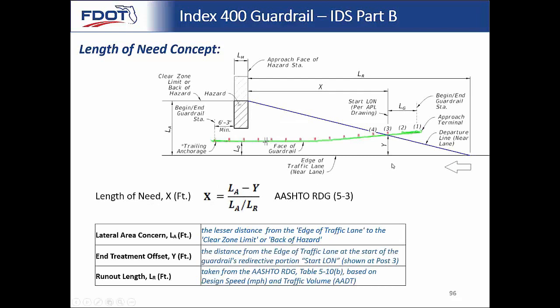This picture comes out of our length of need program and defines some of the variables for the most simple length of need calculation. We have gotten some questions about why we're changing from the previous length of need process. The old calculation was 13 times uppercase D minus lowercase D, or 16 times uppercase D minus lowercase D — a pretty straightforward linear calculation. The issue is that was based on really decades-old AASHTO criteria. In some cases it provides guardrail that's far too long versus the current AASHTO process, and in some cases it actually comes up too short on high-speed facilities.